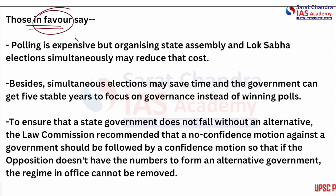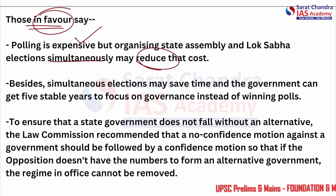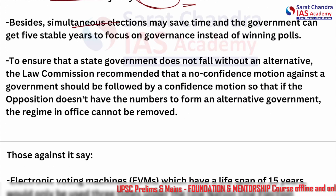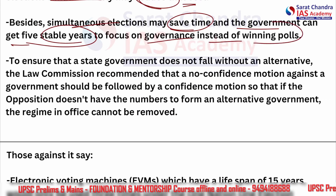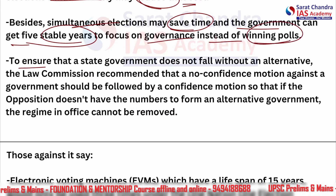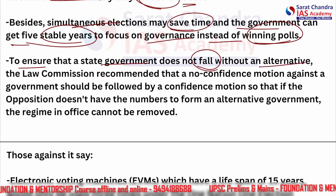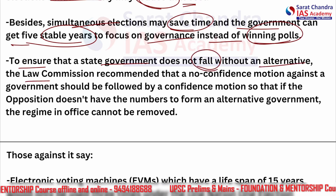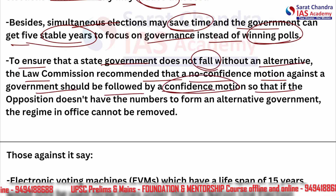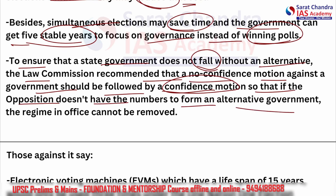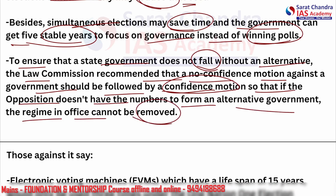Those in favor say that polling is expensive, but organizing state assembly and Lok Sabha elections simultaneously may reduce the overall cost burden on the government. Secondly, simultaneous elections may save time and the government can get five stable years to focus on governance instead of winning polls. Third, the law commission recommended that a no-confidence motion against the government should be followed by a confidence motion, so that if the opposition doesn't have numbers to form an alternative government, the regime in office cannot be removed.